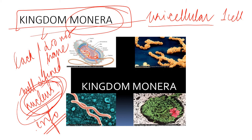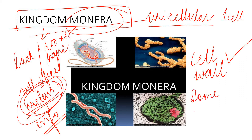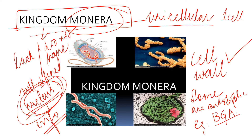Each of these monerans have a cell wall as an outer covering. Some organisms in this kingdom are autotrophic, meaning they can prepare their own food - not all, just some. An example given here is blue-green algae, written in short form. Blue-green algae are part of Kingdom Monera and can prepare their own food.